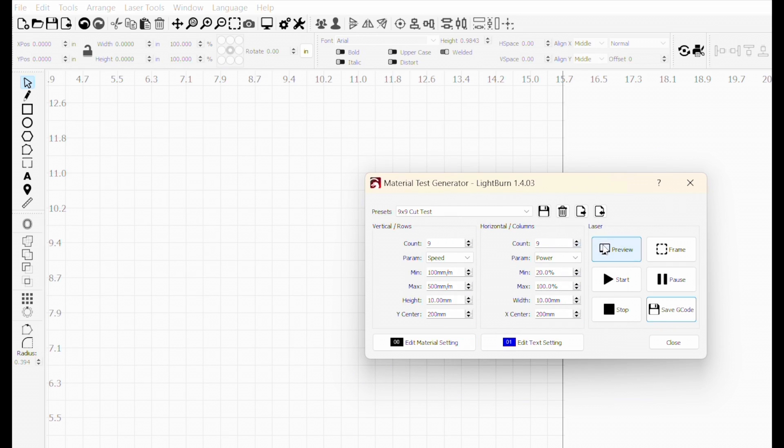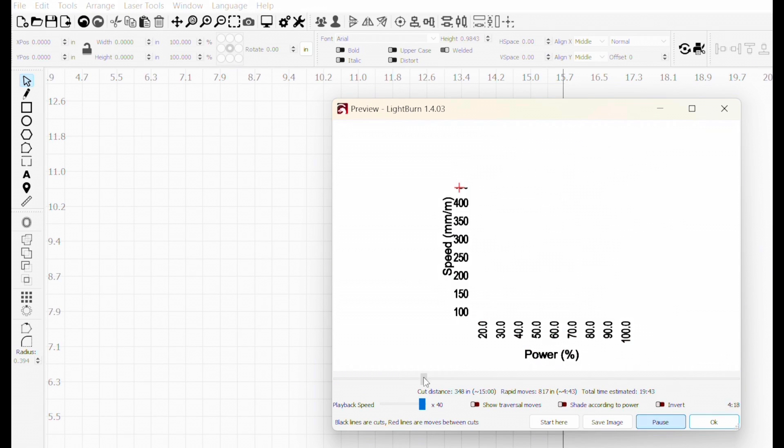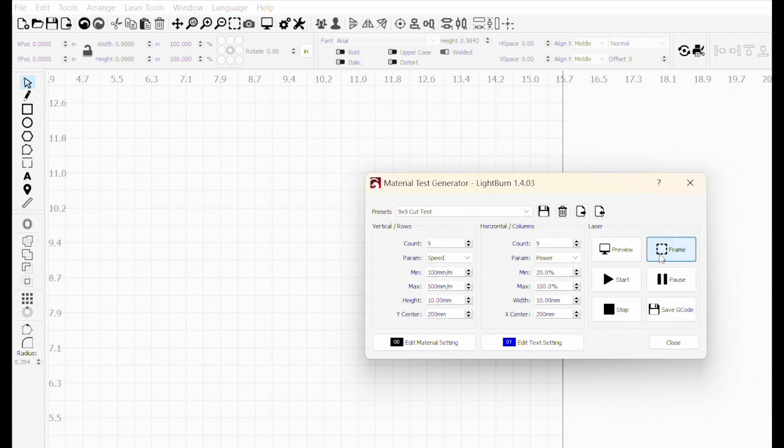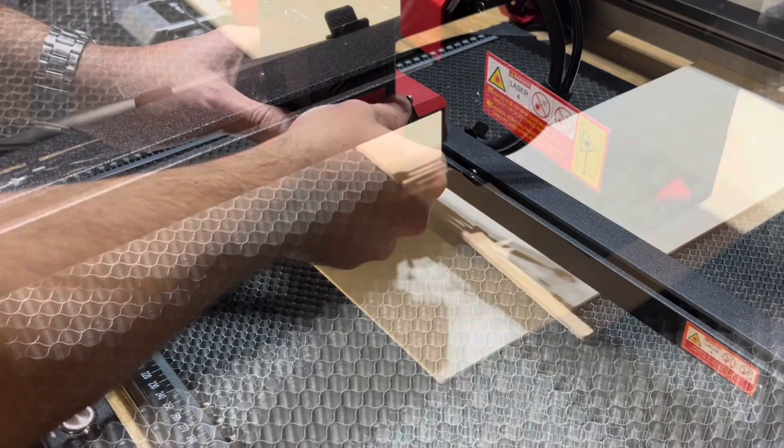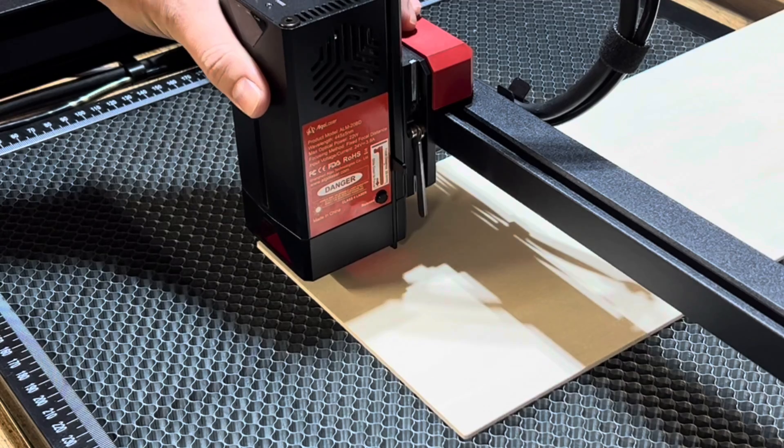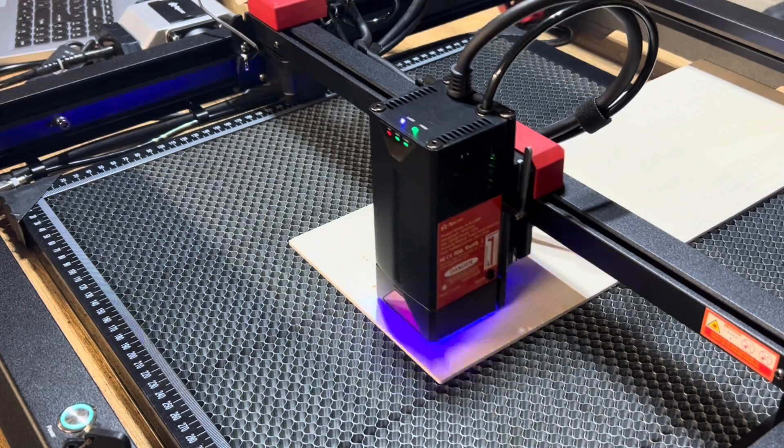Hit the preview button and you see all speeds have round increments of 50 and power has round increments of 10. The test will take approximately 19 minutes. I hit frame to ensure my test piece was centered. An awesome feature is the spring-loaded focus stick. Simply pull down on the lever to lock it and set the focus then push the button to release it. After setting the focal point simply hit the start button to start the job.